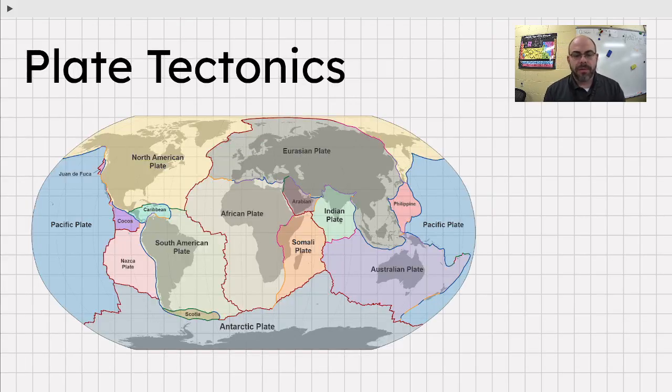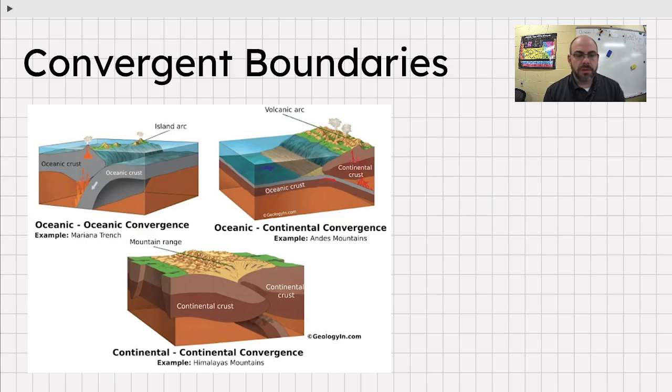There are some different boundaries. You see the boundaries, and there are different kinds of boundaries. One of those is called a convergent boundary. Converge is when two things come together. And so there are three different kinds of convergent boundaries.